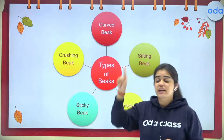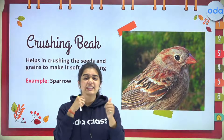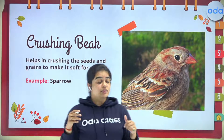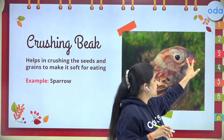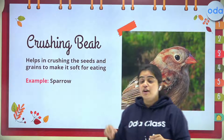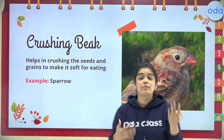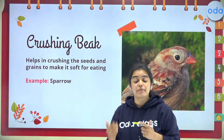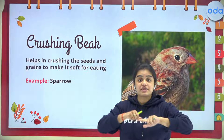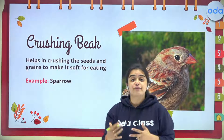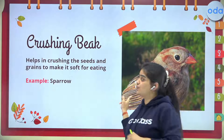We'll start with the crushing beak. When I talk about crushing beak, something is getting crushed — it helps in crushing seeds and grains to make them soft for eating. Look at the bird — its beak is very small. The example is a sparrow, and one more example is a pigeon. Both sparrow and pigeon have a crushing beak.